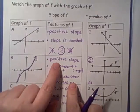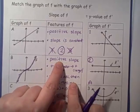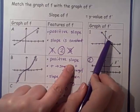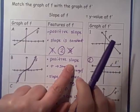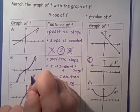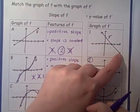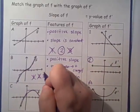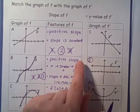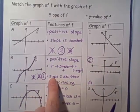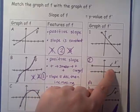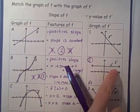Let's look at graph B. We have positive slope, so the y-values should be positive. We can rule out graph 1 because it has positive y-values on one side and negative y-values on the other. It can't be graph 2 either, so it has to be graph 3. For graph 2, the y-values are positive but remain constant, which won't work since our slope has to be decreasing then increasing.